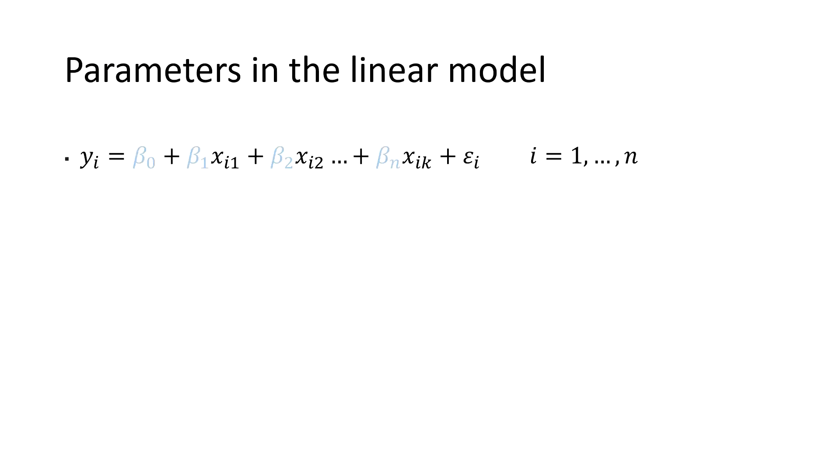Remember that in the linear model there is the intercept beta 0, the weight parameters beta 1 to beta n, and the parameter for the error variance sigma squared. When we fit a linear model to our data, we want to estimate these parameters based on the observed x and y values.